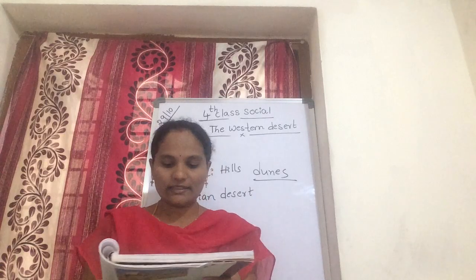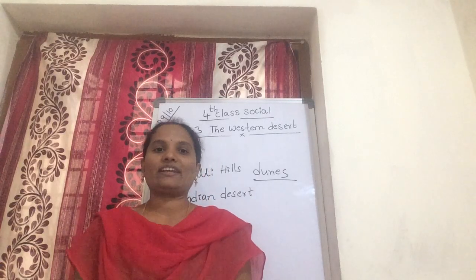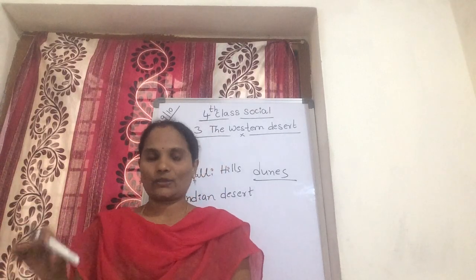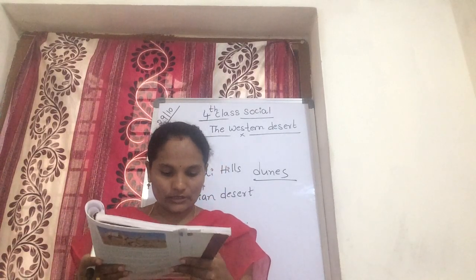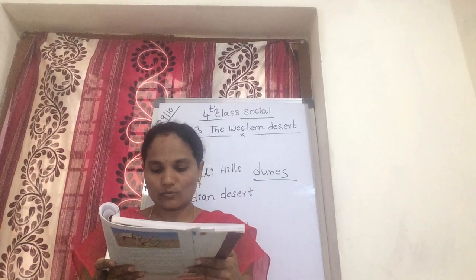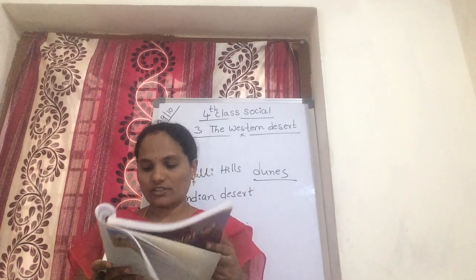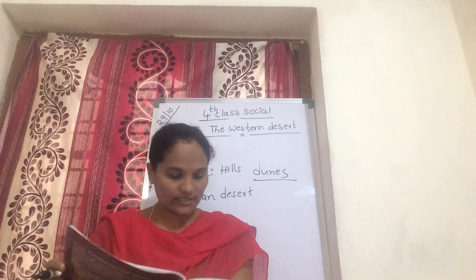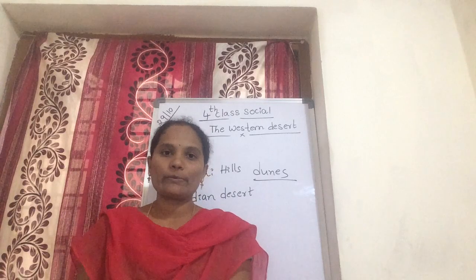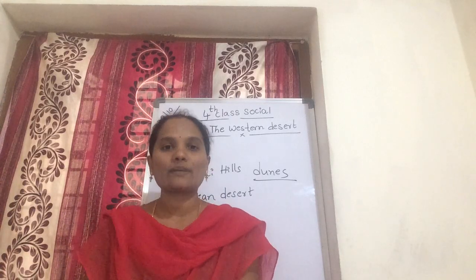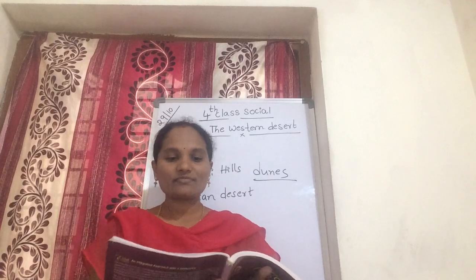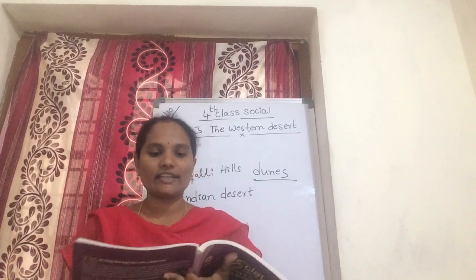There is hardly any rainfall in deserts. There are no permanent rivers, but only some small streams which are usually dry. There are no permanent rivers — only some small streams which are usually dry, and they start flowing only when it rains.